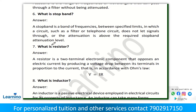Question number seven: what is a resistor? A resistor is a two-terminal electronic component that opposes an electric current by producing a voltage drop between its terminals in proportion to the current, in accordance with Ohm's law — that is, V is equal to IR.